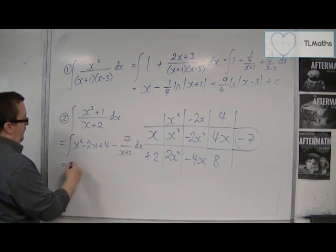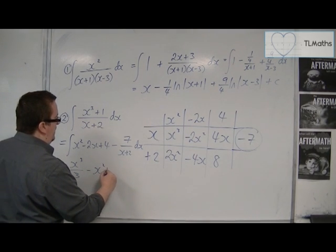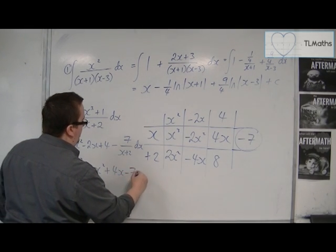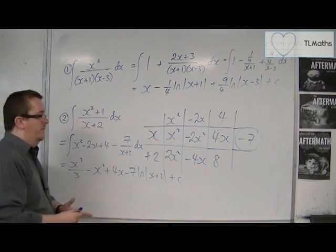We could write this as the integral of x squared minus 2x plus 4 minus 7 over (x+2). That remainder, that bit that couldn't quite divide by x+2. And so this would be x cubed over 3 take away x squared plus 4x minus 7 log|x+2| plus c.